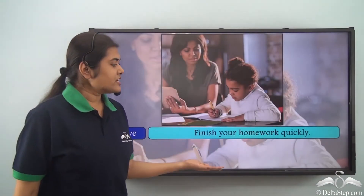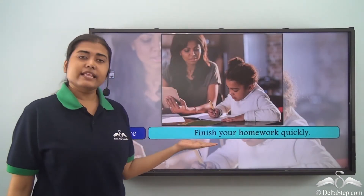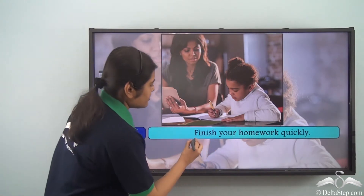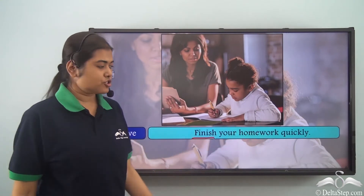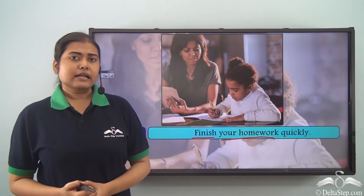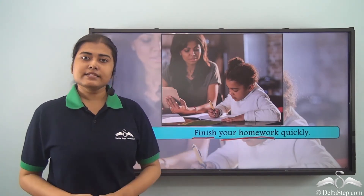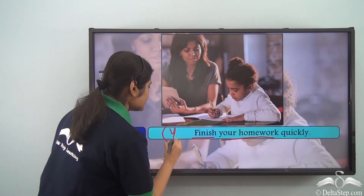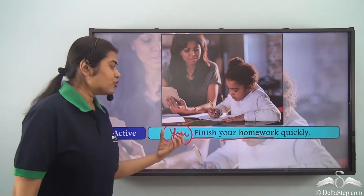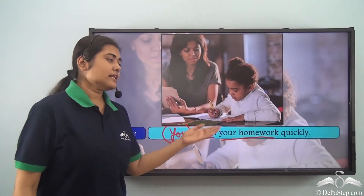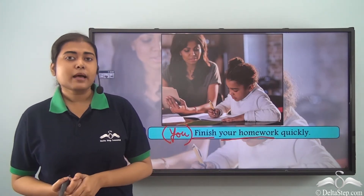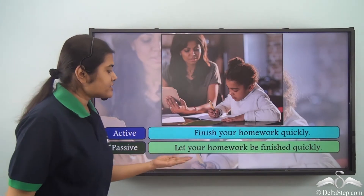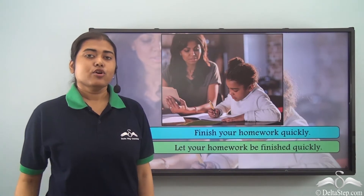Consider the sentence: 'Finish your homework quickly.' This sentence is giving an order. The verb here is 'finish' and the object is 'your homework', but there is no subject mentioned in this sentence. The subject is not mentioned but it is understood — it is 'you'. In such sentences, the rule for changing to passive form is slightly different. We write it as: 'Let your homework be finished quickly.'